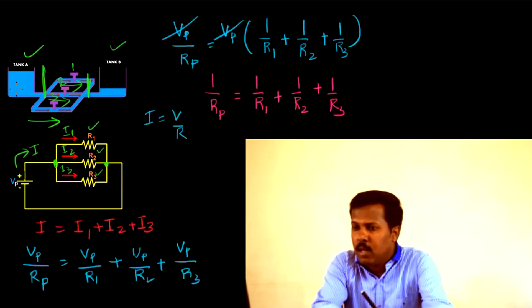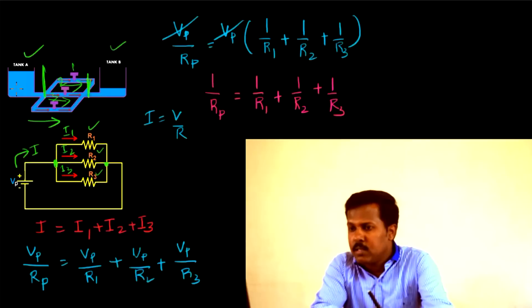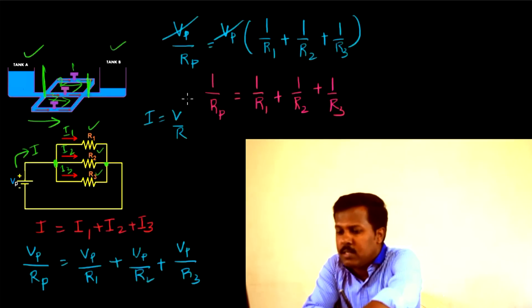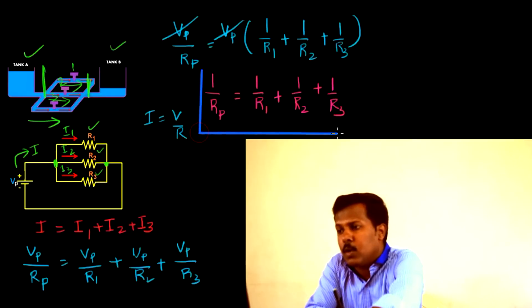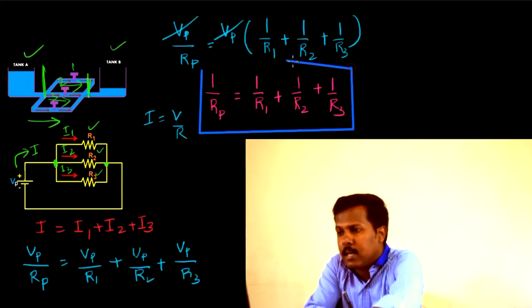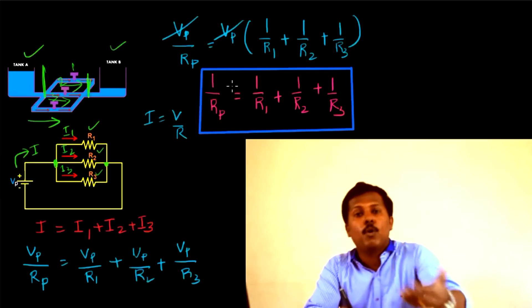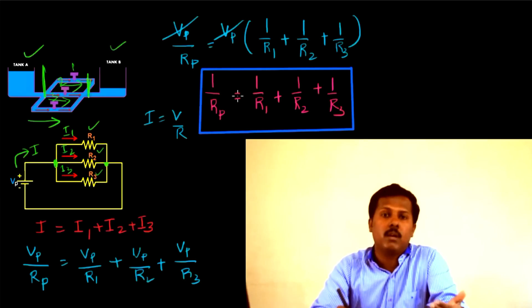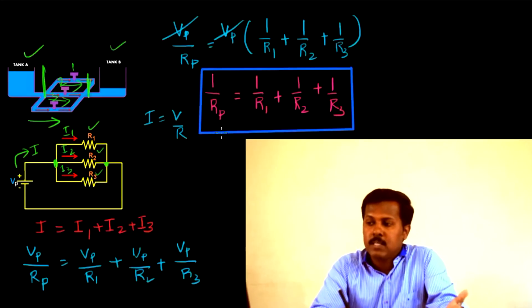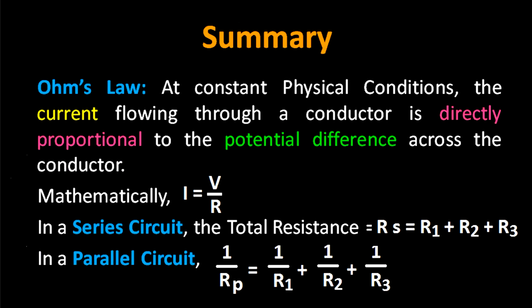This is an important equation. It states that the reciprocal of the total resistance in a parallel circuit is equal to the sum of the reciprocals of the individual resistors: 1/Rp = 1/R1 + 1/R2 + 1/R3.